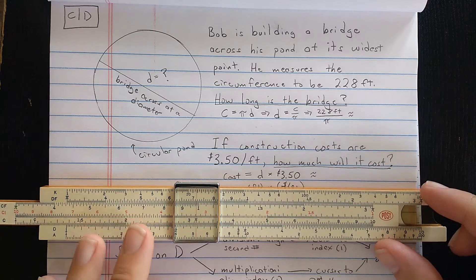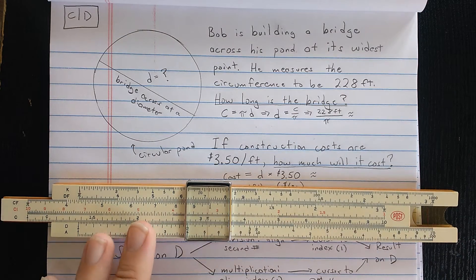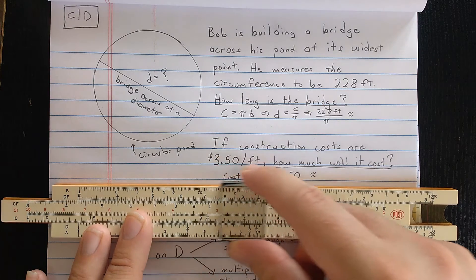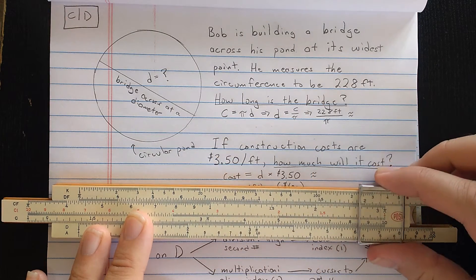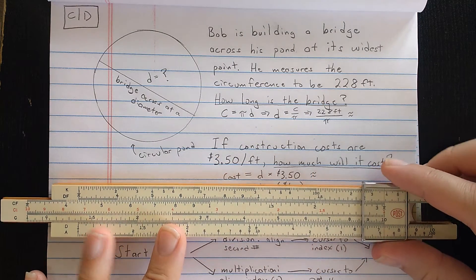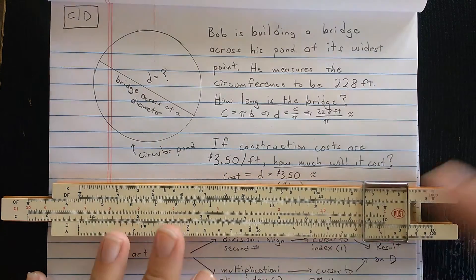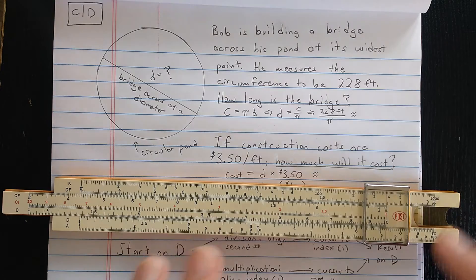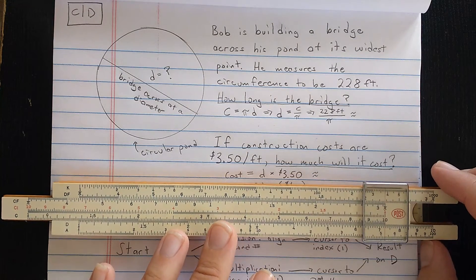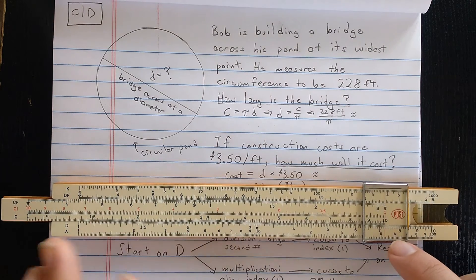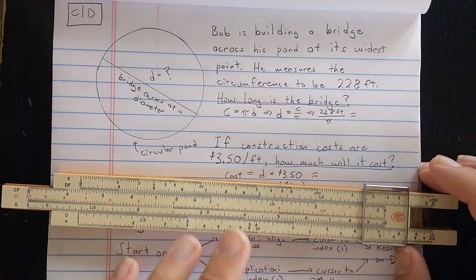Okay, so I found the second number on the C scale. Then what I will do is go out to the index of the C scale. When you divide in this manner, either the right index or the left index will be available to move the cursor to. Sometimes it's this one, and sometimes it's the other one.